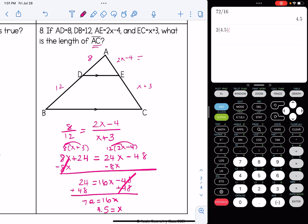This is 4.5 plus 3, so 7.5. So the total length of AC is 12.5. I'll write that over here. AC equals 12.5.